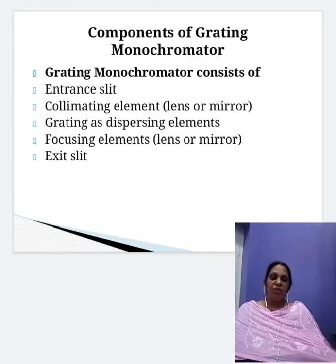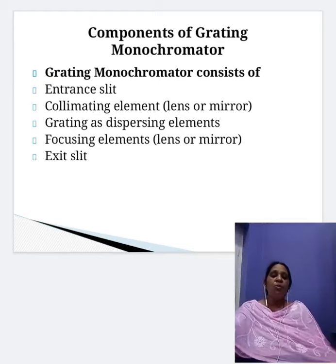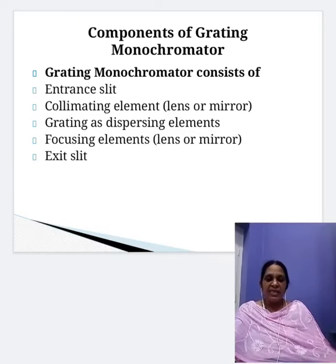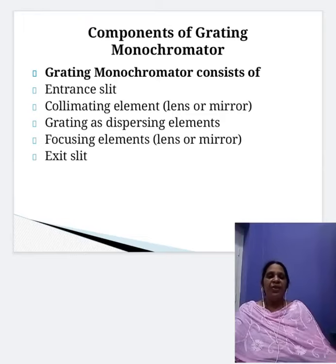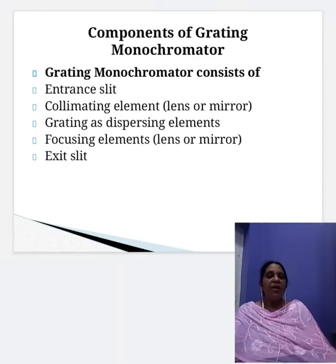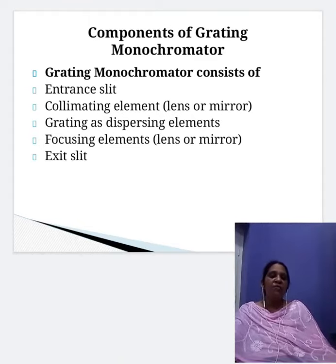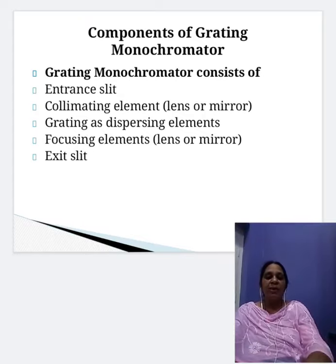The grating monochromator consists of: an entrance slit that provides a narrow optical image of the radiation source; a collimating element that makes the light rendered parallel from the entrance slit; a grating used for dispersing the incident radiation; a focusing element that reforms the images of the desired spectral band; and an exit slit used to isolate the desired spectral band.